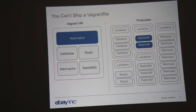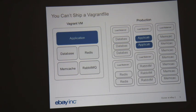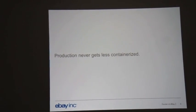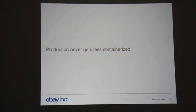On one side you have a single machine with your application running with all service dependencies in Vagrant. But in production your app is running on who knows how many machines behind a load balancer, connecting to databases that are behind load balancers and other services behind load balancers. Production is essentially a sequence of containers — your app is never going to be running on the same machine as your database. And production is never going to get less containerized. The more you grow, the more you split things out, the more you containerize. So there's no excuse we shouldn't be doing that in dev.